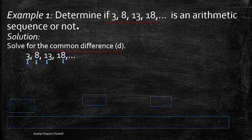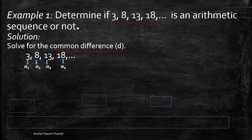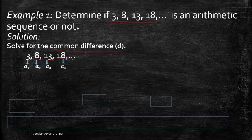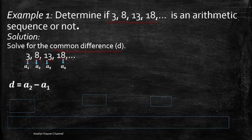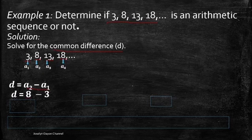For the sequence 3, 8, 13, 18: the first term is 3, the second term is 8, the third term is 13, and the fourth term is 18. To solve for the common difference, we subtract a term by its preceding term. So we have a₂ minus a₁ — substituting, that is 8 minus 3.